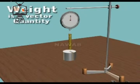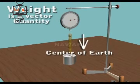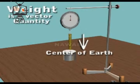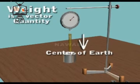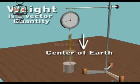Contrary to mass, the weight is a vector quantity, and its direction is towards the center of the Earth. We know that the Earth pulls everything towards its center. Hence, the weight of a body is equal to the force with which the Earth attracts that body towards its center.